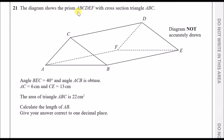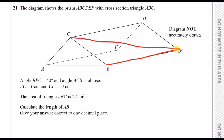The diagram shows the prism ABCDEF with cross-section triangle ABC — that's the front face of this prism. They give us some information: angle BEC is 40 degrees, so from B to E to C, that's 40 degrees. They also tell us that angle ACB is obtuse.